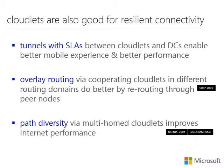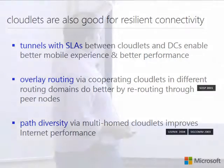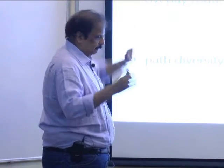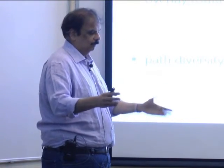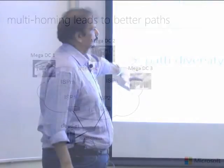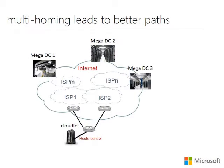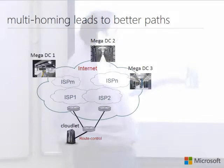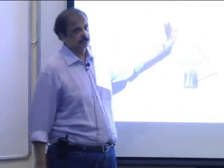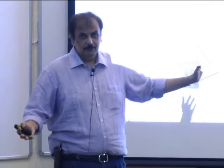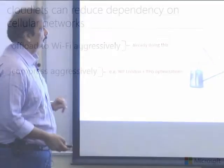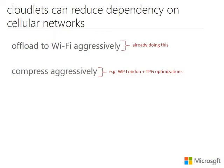Going back to cloudlets: what I mentioned earlier was building a network that is much better from the cloudlets to the cloud. We can do overlay routing and path diversity. Path diversity shows that if a cloudlet is connected to multiple ISPs — for example, if there are three data centers and it has two ISPs — you have up to six different ways of getting to the cloud, and you can choose the best path.